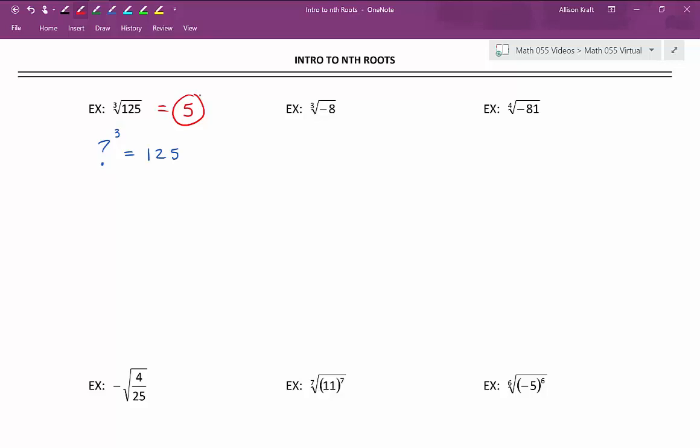In our next example, the cube root of negative 8. Notice I have a negative radicand. Now I need to check the index. If the index is even, it's not going to be a real number. But if our index is odd, I should be able to find an answer. Our index is 3, which is an odd number. We should be able to come up with an answer. So what number raised to the third power gives us negative 8? Negative 2 to the third power is equal to negative 8. Therefore, the cube root of negative 8 is negative 2.